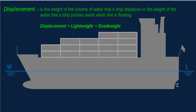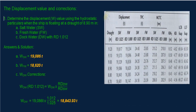The same idea applies to a ship in water — the weight of the volume of displaced water equals the ship's displacement. Mathematically, displacement equals lightweight plus dead weight. We can also extract the displacement value using the hydrostatic table, which can be found in the stability booklet. I have a sample hydrostatic table here, and I will make a separate video on how to use it and how to read draft marks.